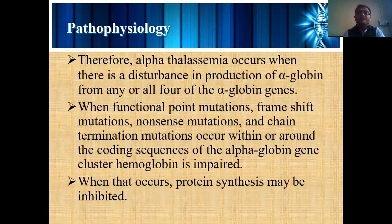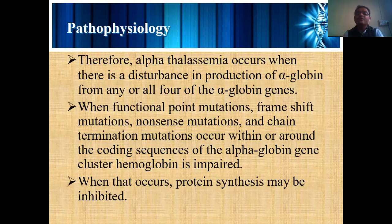Therefore, Alpha Thalassemia occurs when there is a disturbance in the production of alpha globulin from any or all forms of alpha globulin genes. When any alteration occurs in any one form or all forms of that particular alpha globulin gene, it may produce a different type of alpha globulin that is not required, creating disturbances and causing this condition to occur.